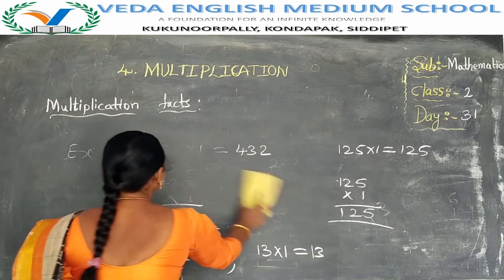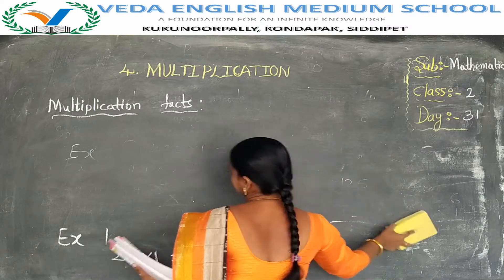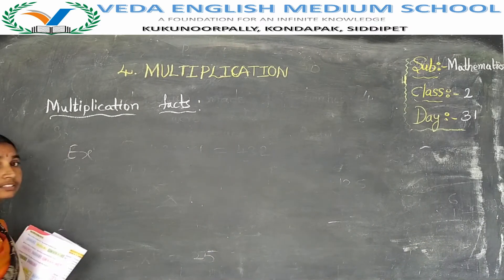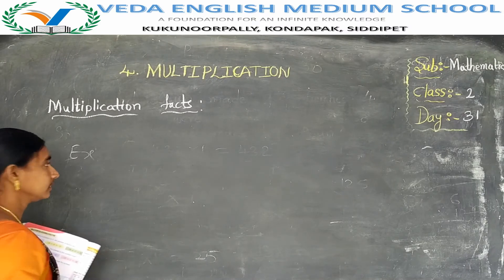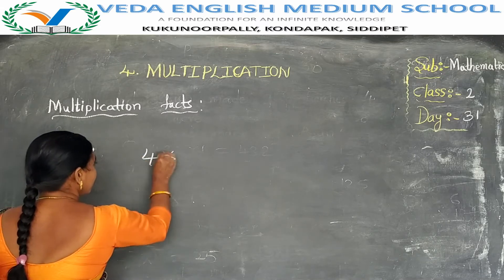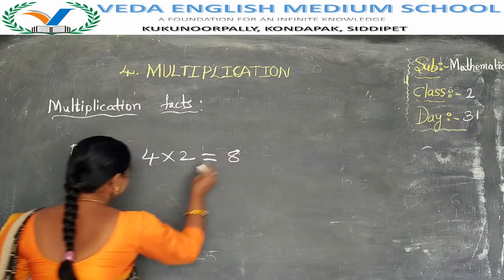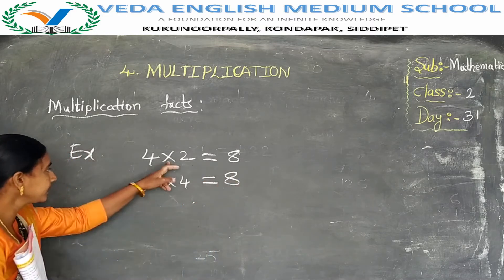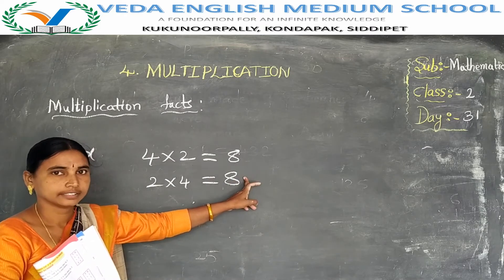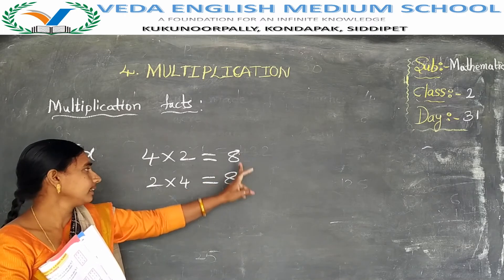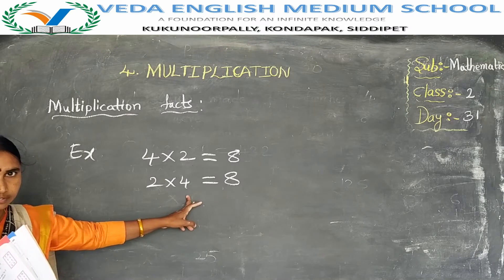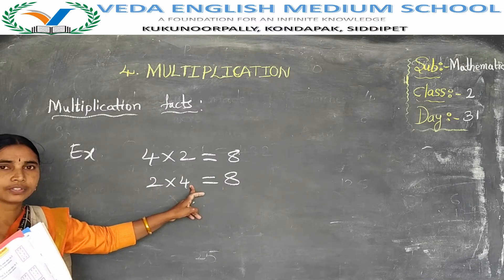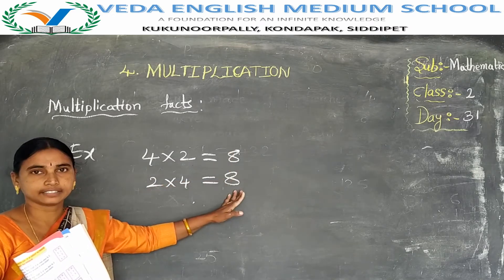Next: in multiplication, when the order of numbers changes, the answer does not change. For example, 4 into 2 is 8. Now change the order: 2 into 4 is also 8. Order changes, but the answer does not change — we get the same answer. Here the first number is 4 and second is 2; in the second one, first is 2 and second is 4. Order changes, but the answer does not change.